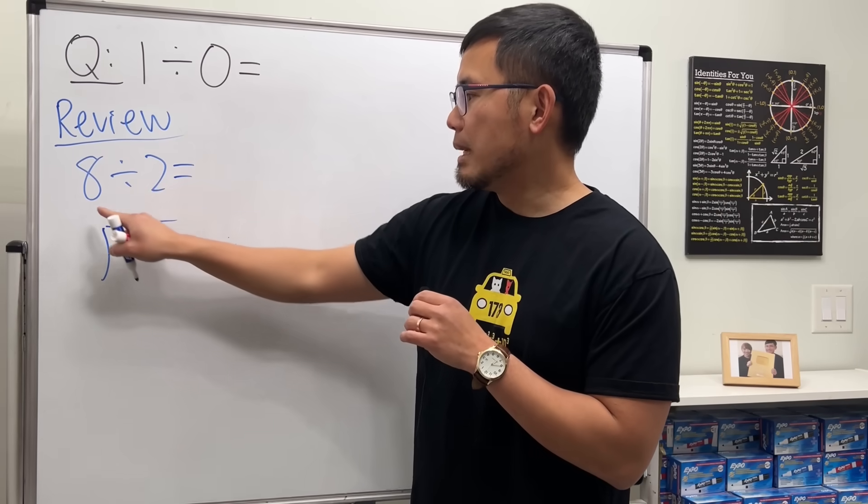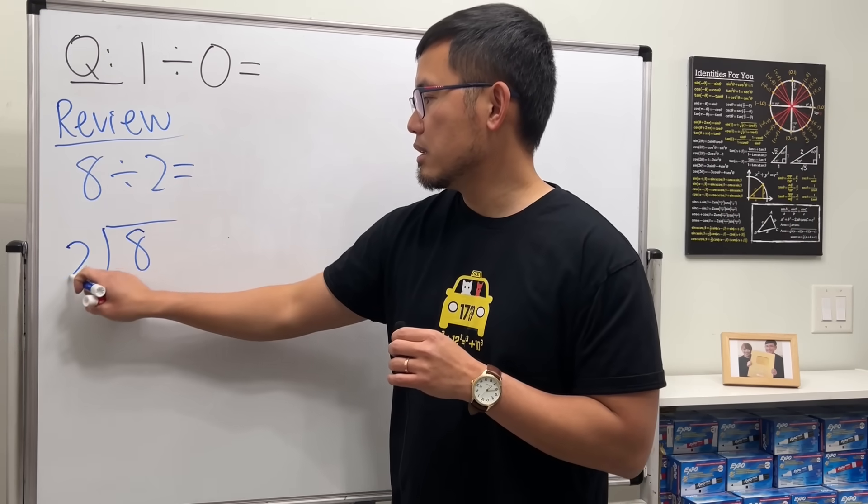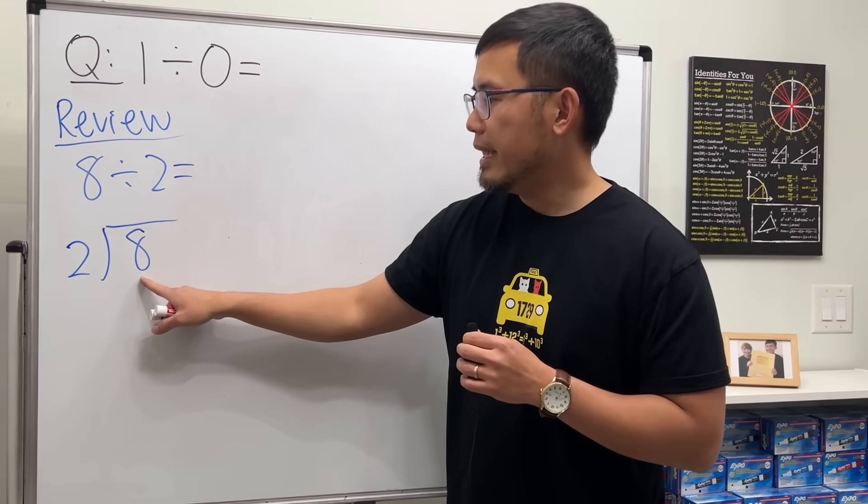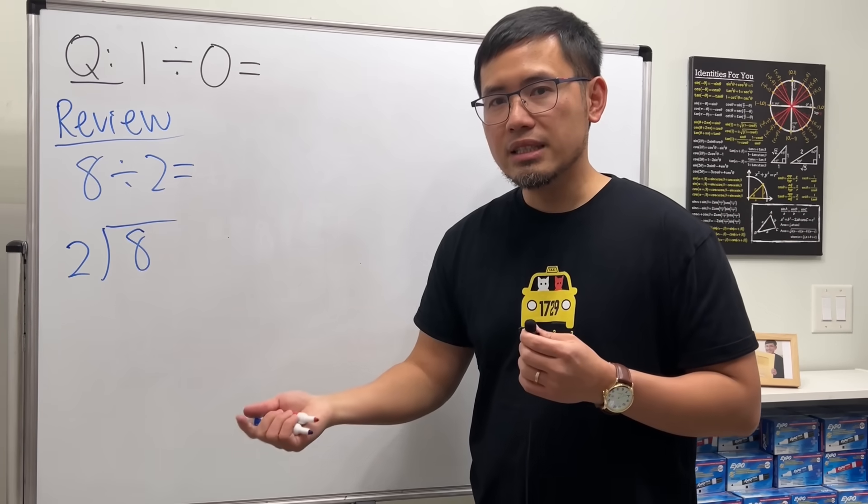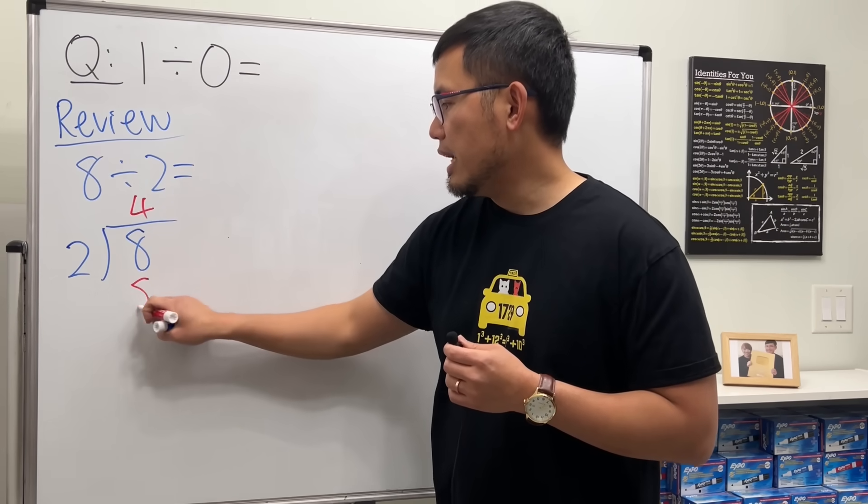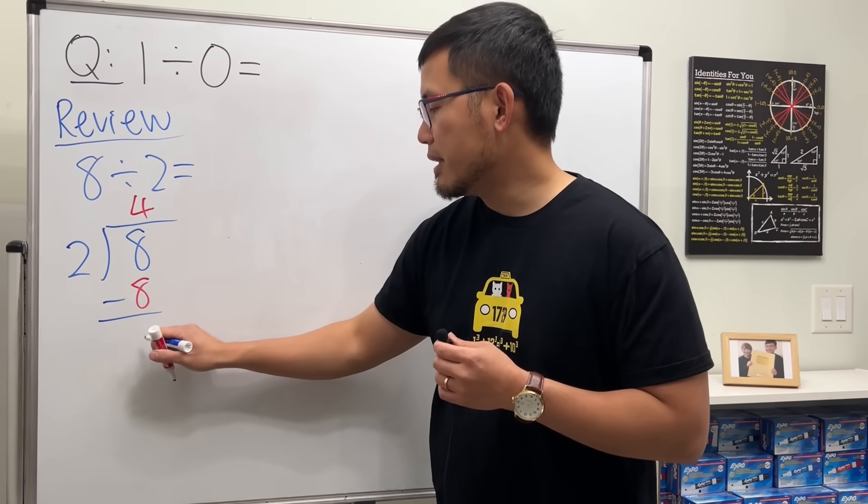You put the first number inside, and then put the second number on the other side. And then you ask yourself, 2 goes into 8 how many times? And the answer is 4. You put it here, and times 2 is 8. And then you subtract. 8 minus 8 is 0.